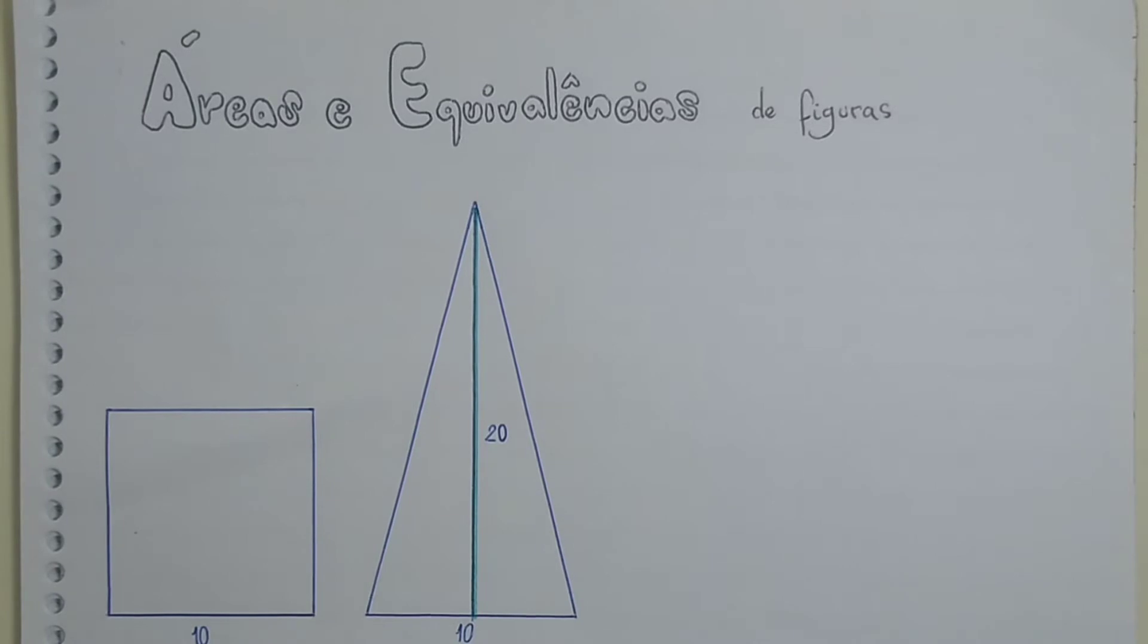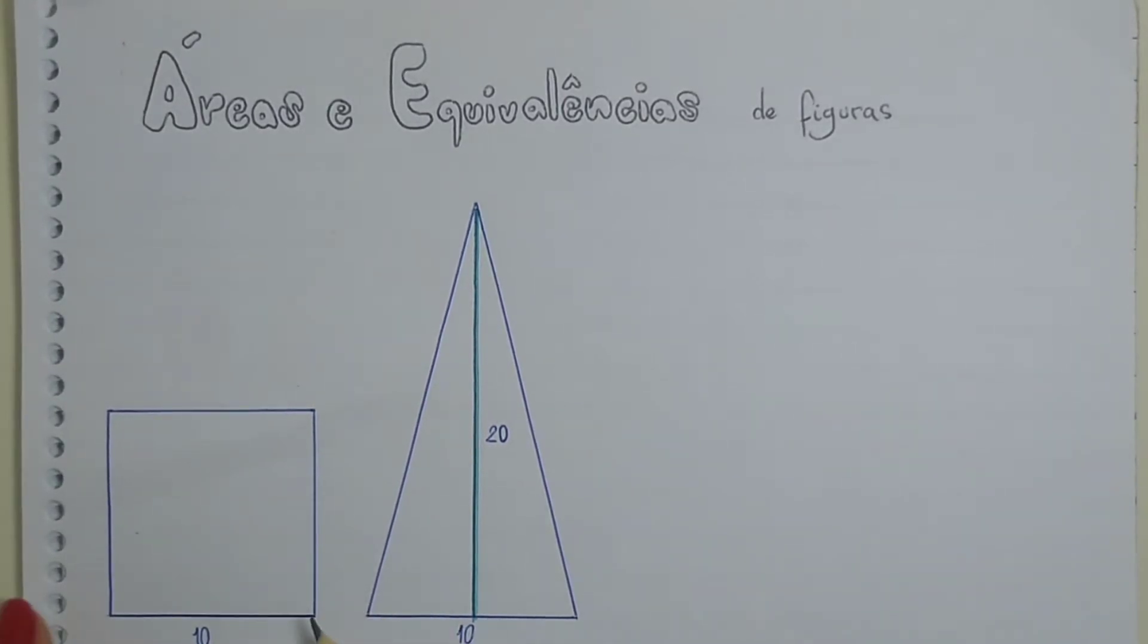We have a square and a triangle. What do these two figures have in common? Well, first of all, we'll see that there is a measure of 10, which is here as the side of this square, as this measure of 10, which is also the base of this triangle.